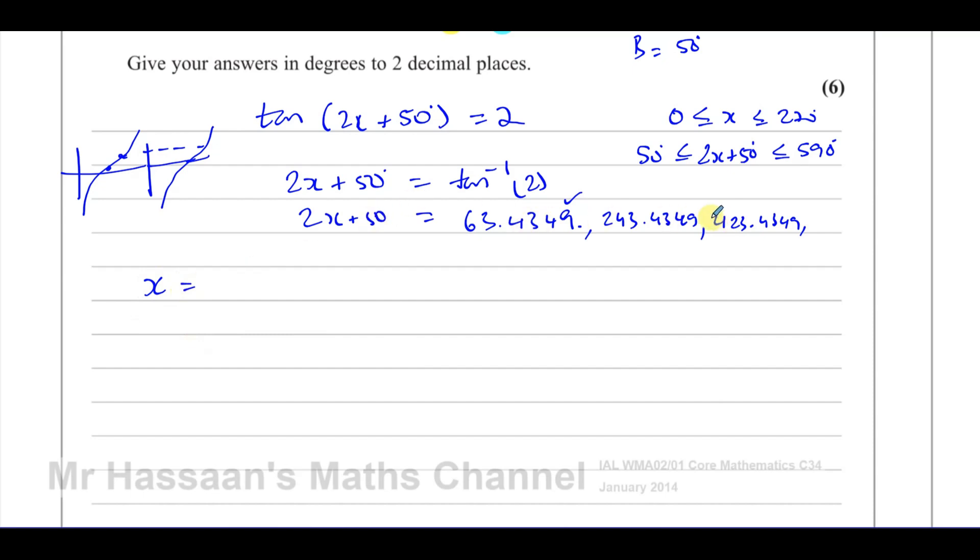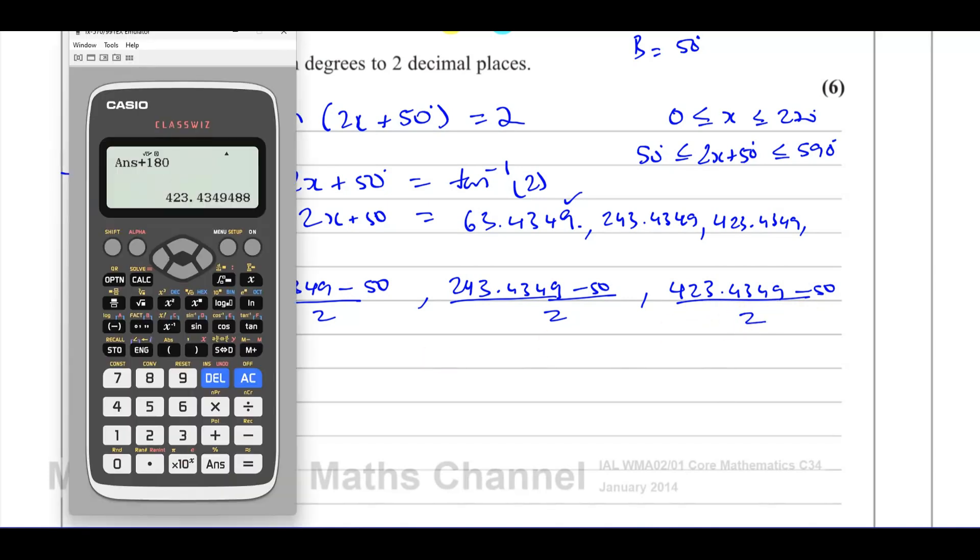So we have 2x plus 50 equals these angles. So in order to find our x, we have to take away 50 from each of them and divide each of them by 2. So we have 63.4349 take away 50 and divide it by 2. And we have 243.4349 minus 50, and then divide by 2. And then we have 423.4349 take away 50 and then divide it by 2.